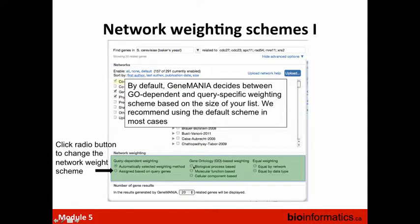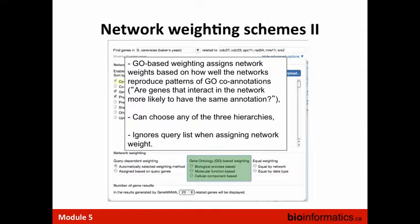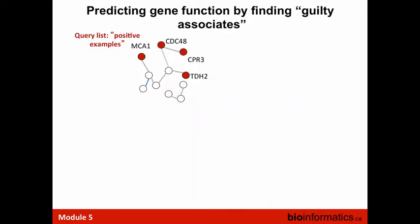If you want to define your question more precisely, you can specify whether you're asking about the biological process, molecular function, or cellular component of a single gene. You can choose from one of these three weighting schemes — we weight networks based on how well they reproduce co-annotation patterns in Gene Ontology, which has three different hierarchies: biological process, molecular function, and cellular component.